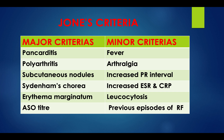Jones criteria: major criteria are pancarditis, polyarthritis, subcutaneous nodules, Sydenham's chorea, and erythema marginatum. Minor criteria include fever, arthralgia, increased PR interval, increased ESR, increased CRP, leucocytosis, and previous episodes of rheumatic fever. ASO titer is also considered.